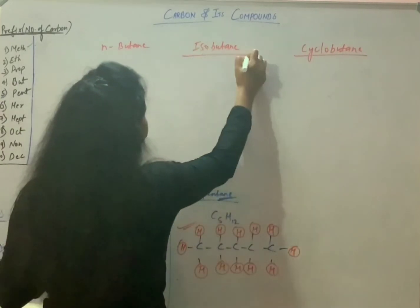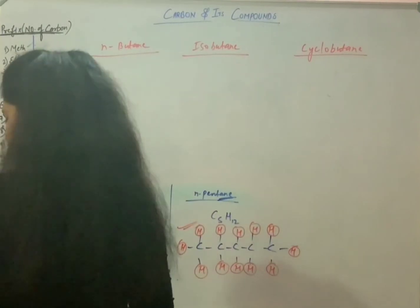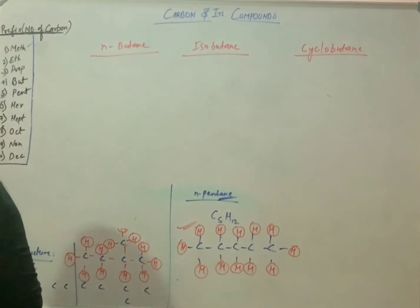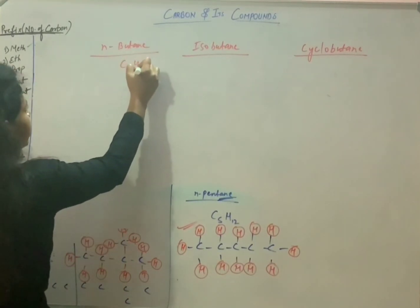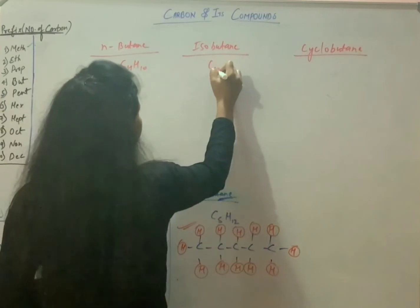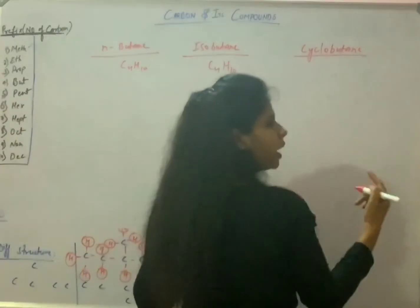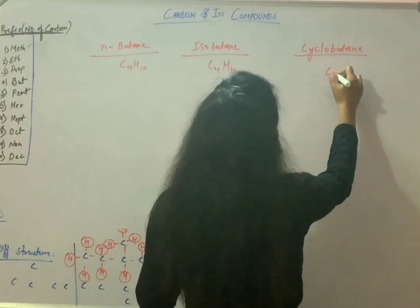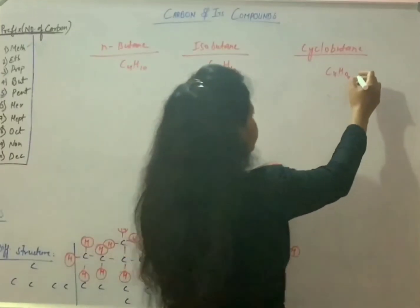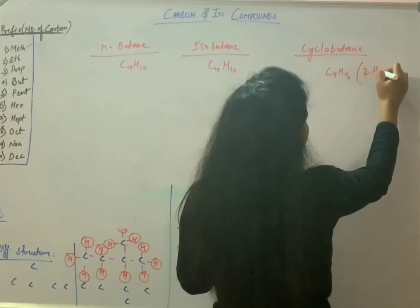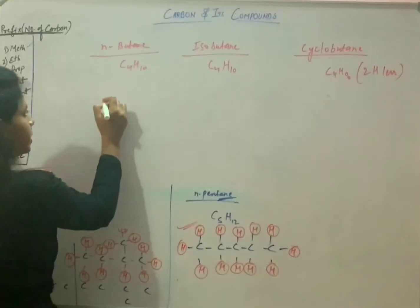Normal butane is C4H10, isobutane is also C4H10. But in the case of cyclo, you have to subtract two hydrogens, so cyclobutane is C4H8 — two hydrogens less. Now draw the structure: one, two, three, four carbons in a ring.